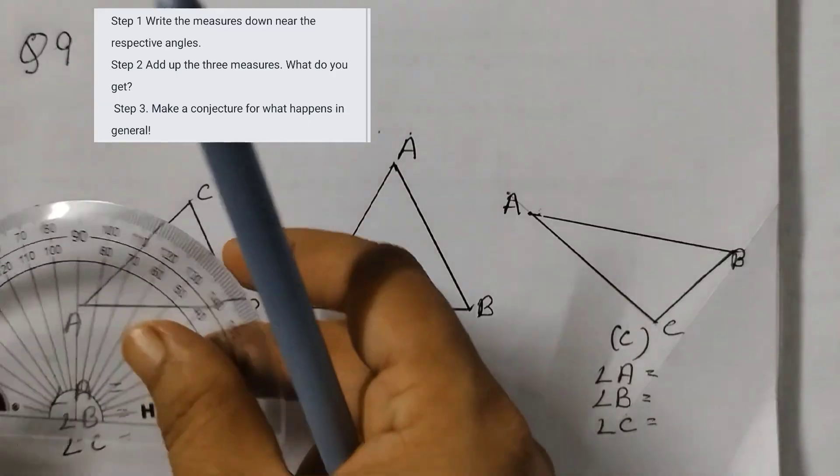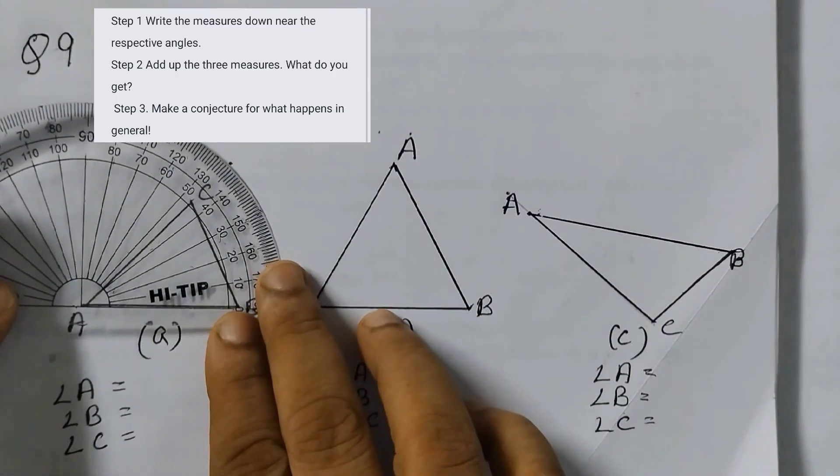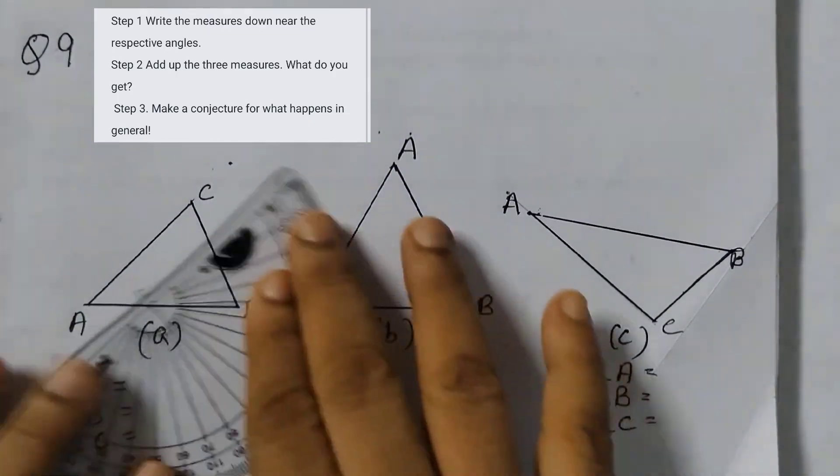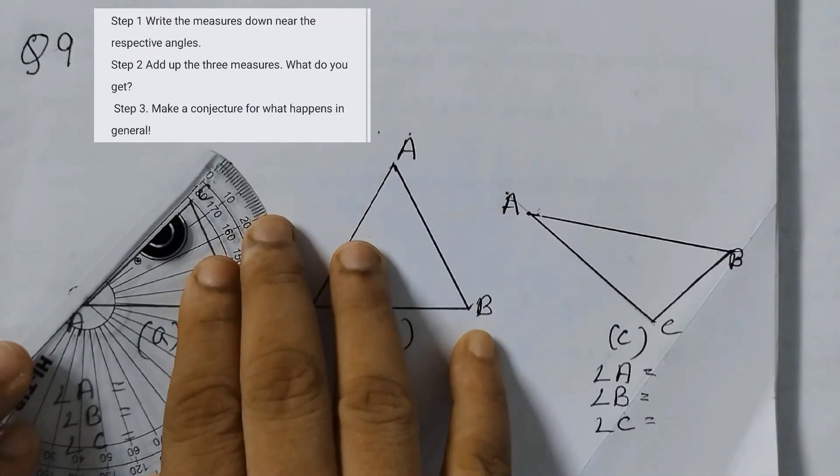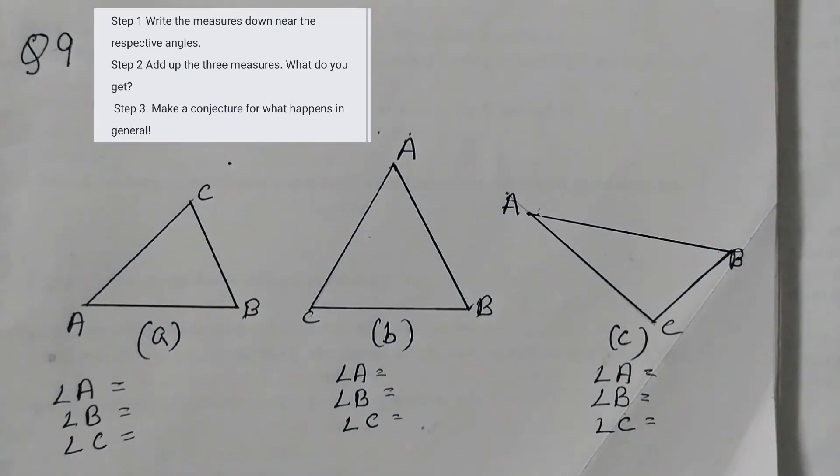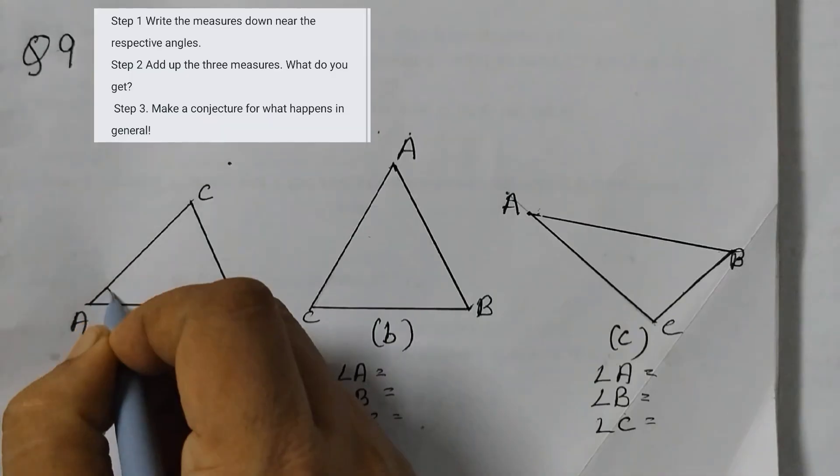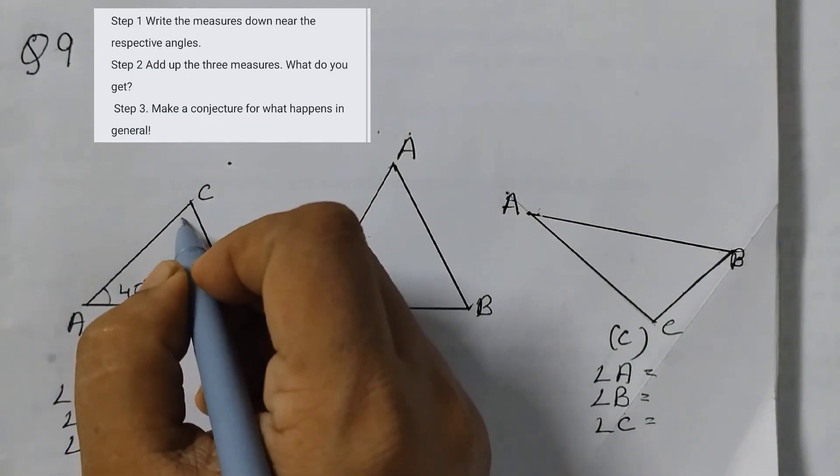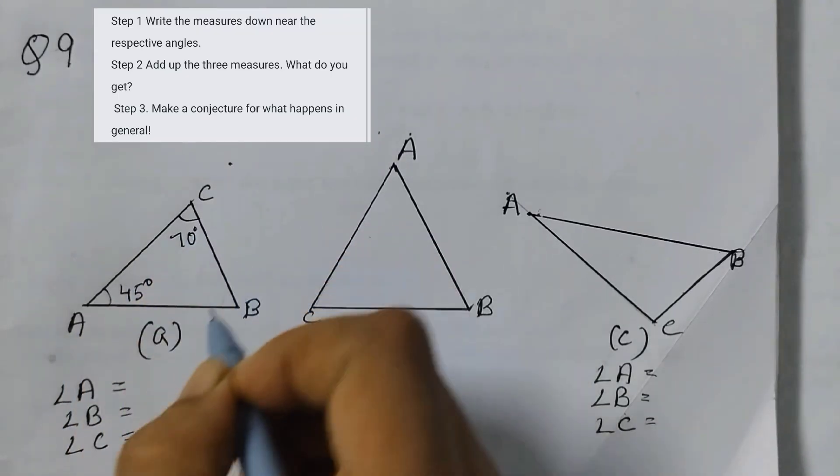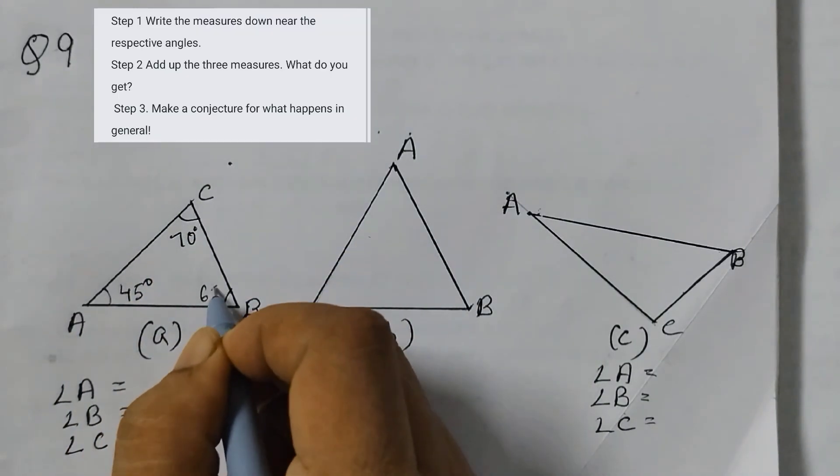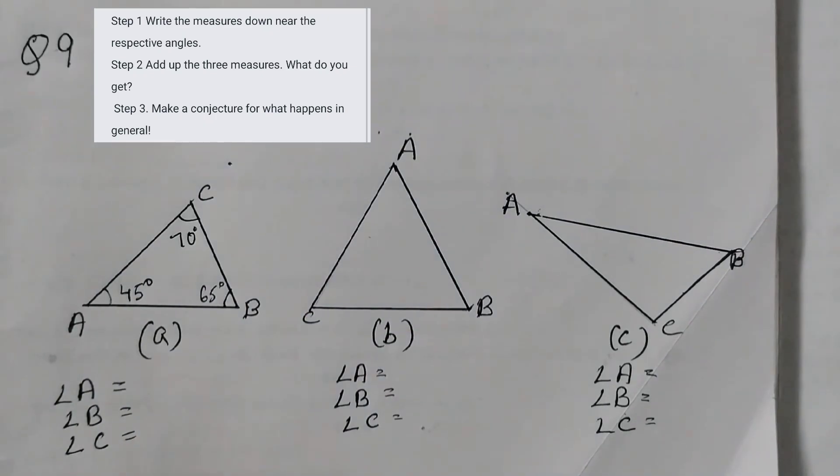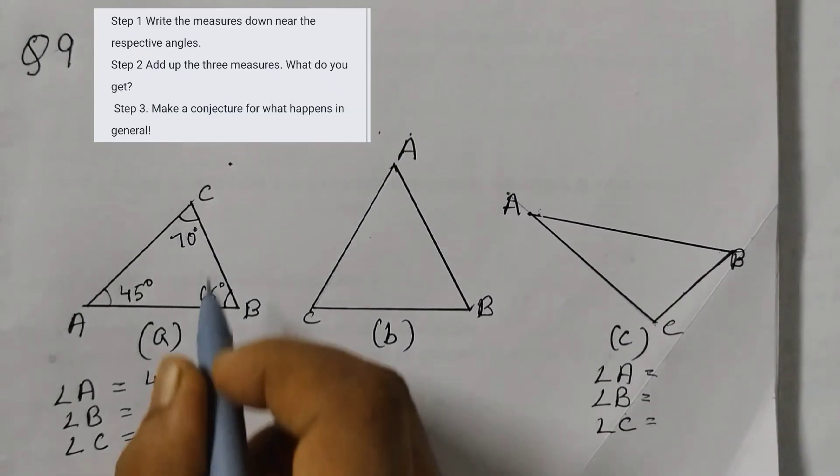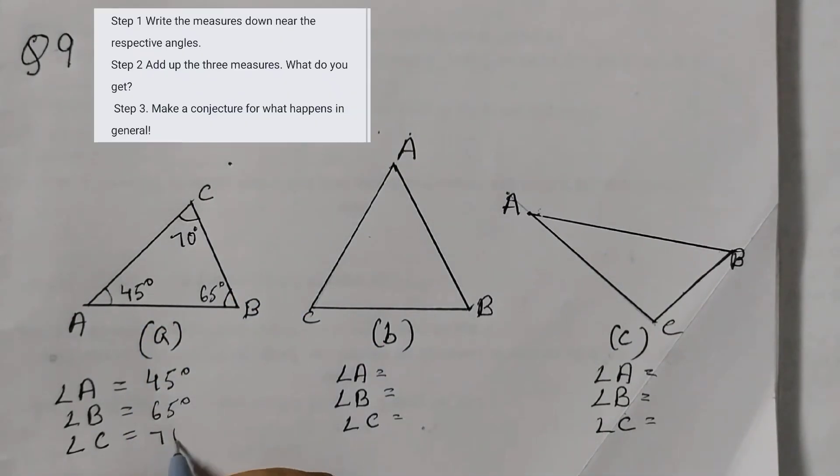So let's do the measurement first. When you measure it you can measure it like this or you can measure it like this. Anyhow you can make the measurement and when you measure this angle you will find this angle is 45 degrees. I have already measured these angles. So this is 45 degrees, this is 70 degrees, and this angle is 65 degrees. By now you should know how to measure the angles. So angle A is 45 degrees, angle B 65 degrees, and angle C is 70 degrees.